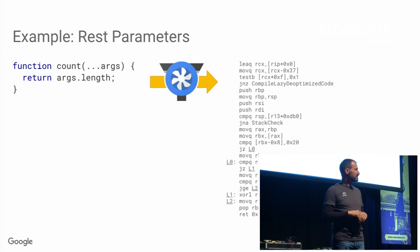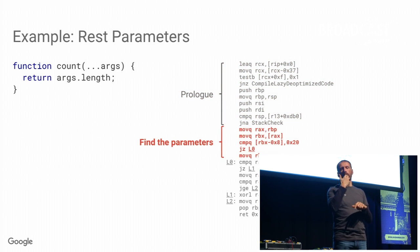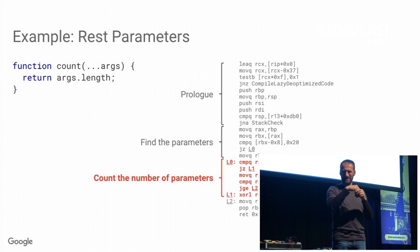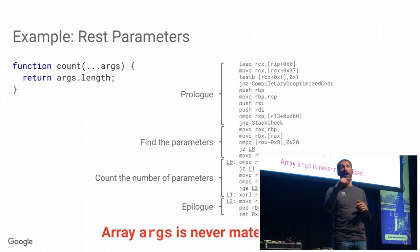It's just to give you an overview. We start with a prologue, then we need to find the parameters on the stack, then we count the number of parameters, and then we return that. The array 'args' is never allocated anywhere — it just disappeared. It's magic.